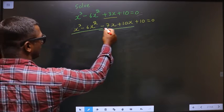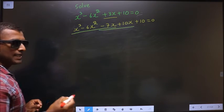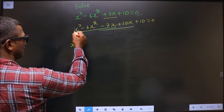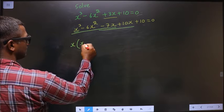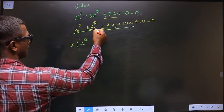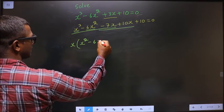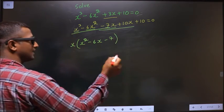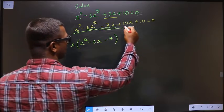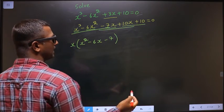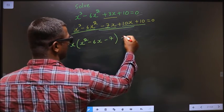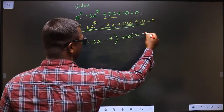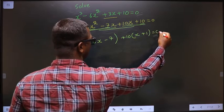Now from the first three terms, what can be taken out common is x. So from x cubed, taking x out gives x squared; here you get minus 6x; here you get minus 7. From the last two terms, what can be taken out common is plus 10, so here I get x, and here I get plus 1, equal to 0.